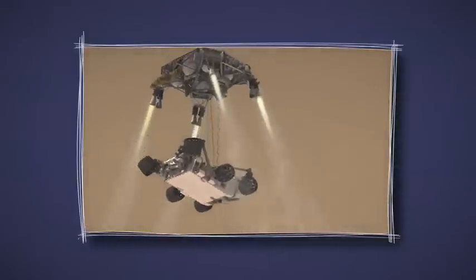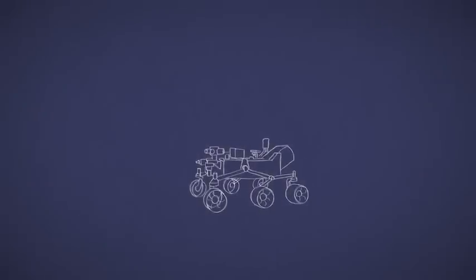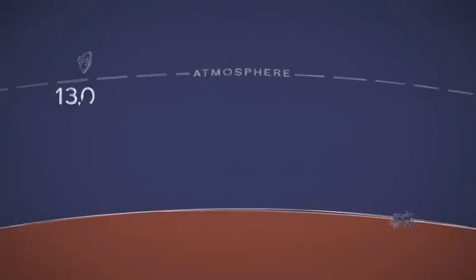Curiosity is the biggest, most capable Mars rover yet and needs a new type of landing to reach the ground safely. In this 7-minute trip to the surface of Mars, we have to slow down from over 13,000 miles an hour down to zero.